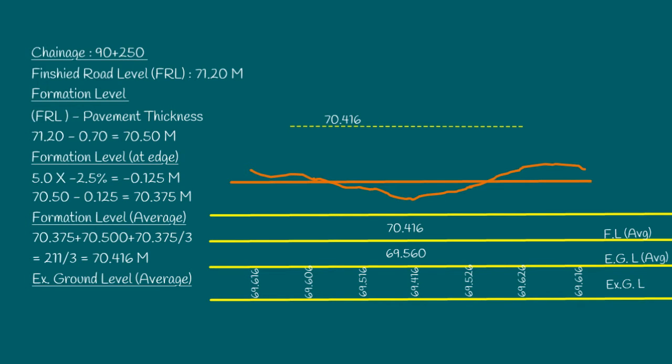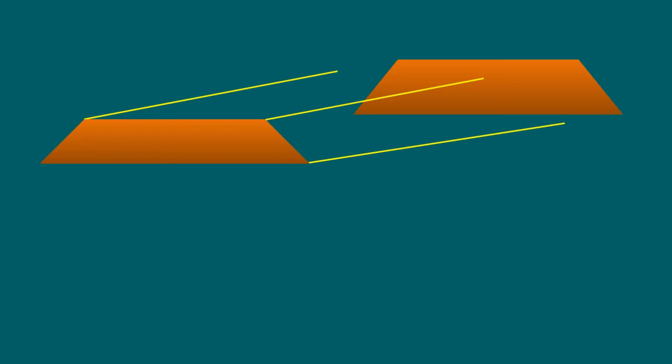Here, the average of the existing ground level, which is 69.56 meters for road projects.